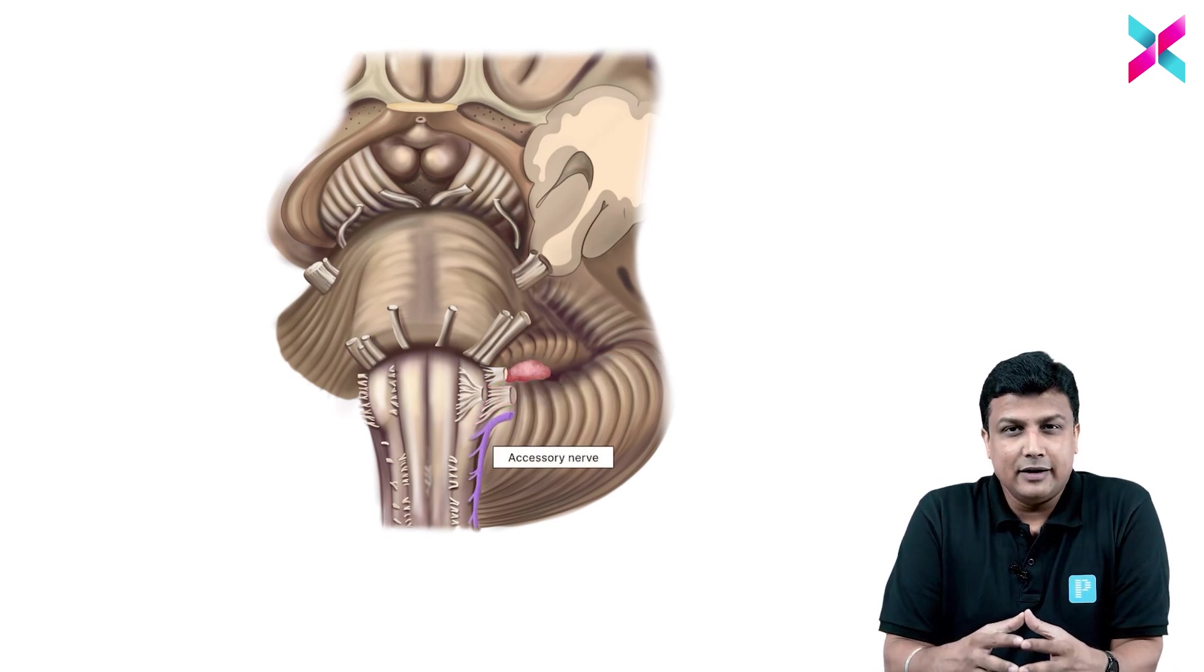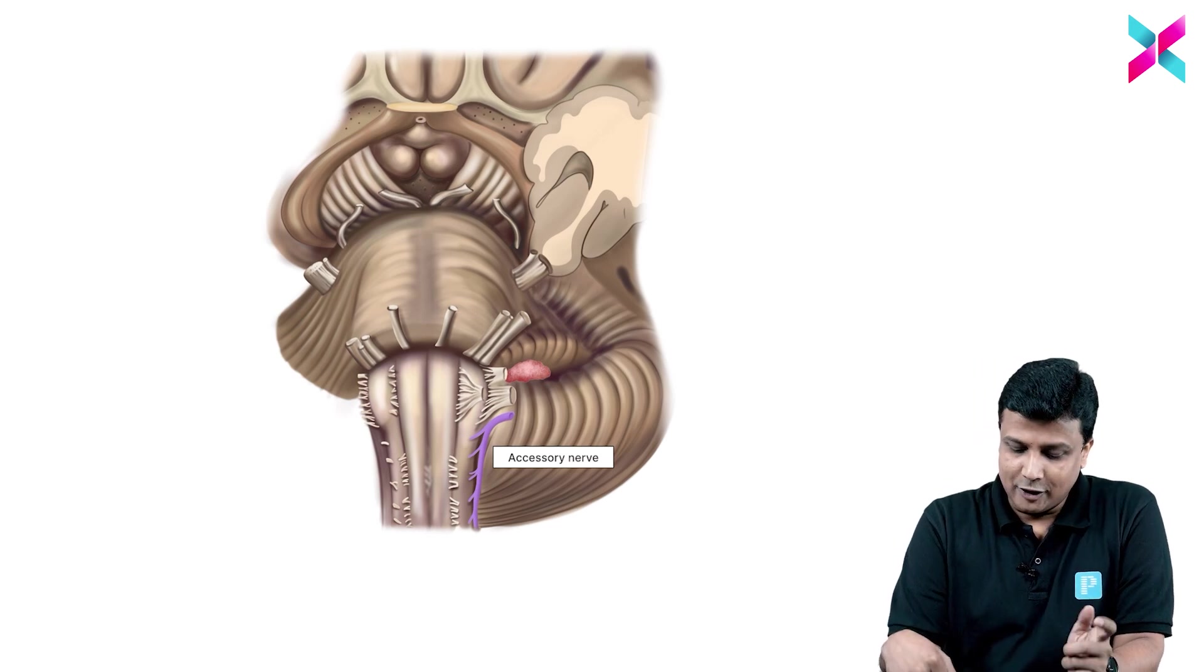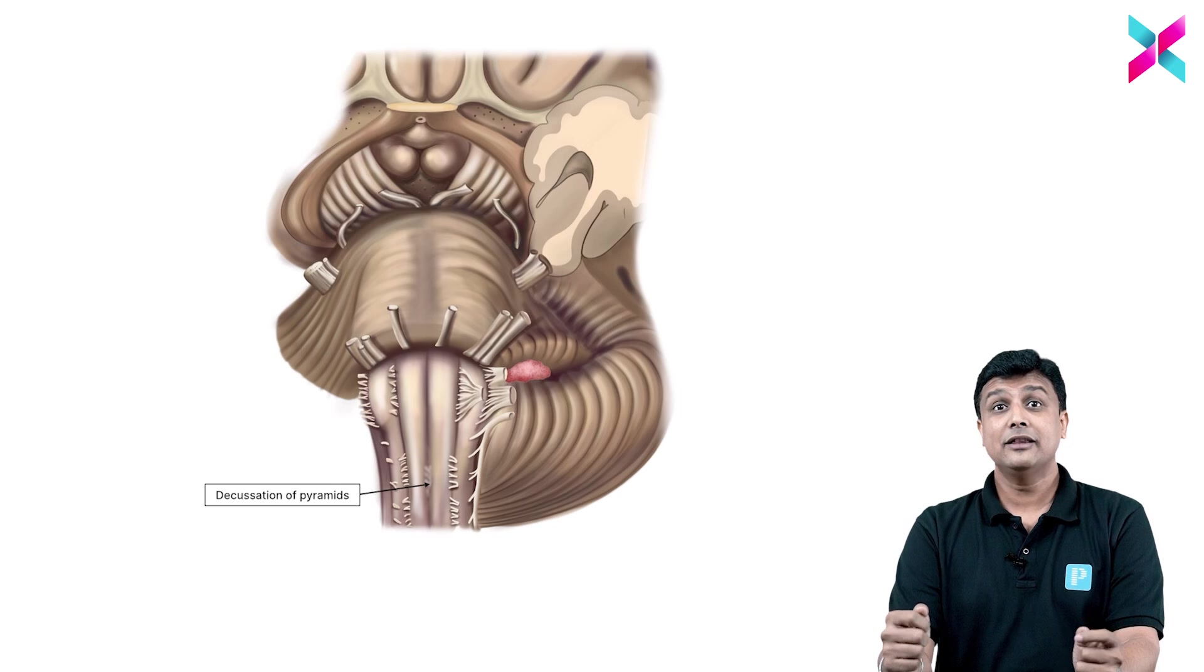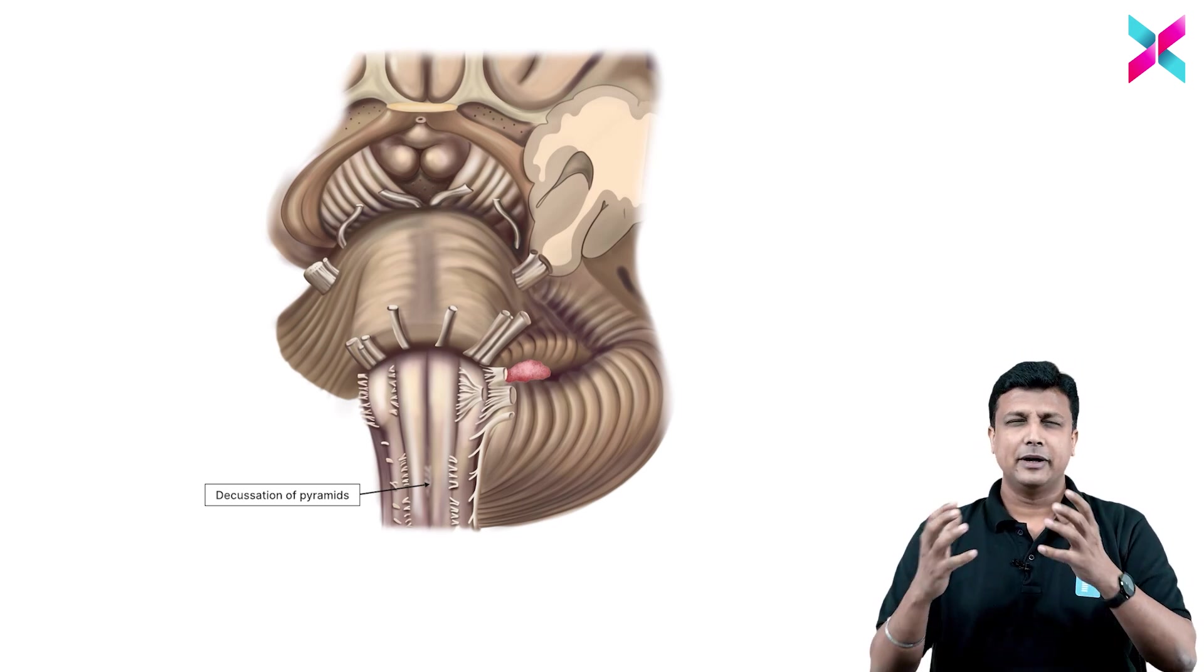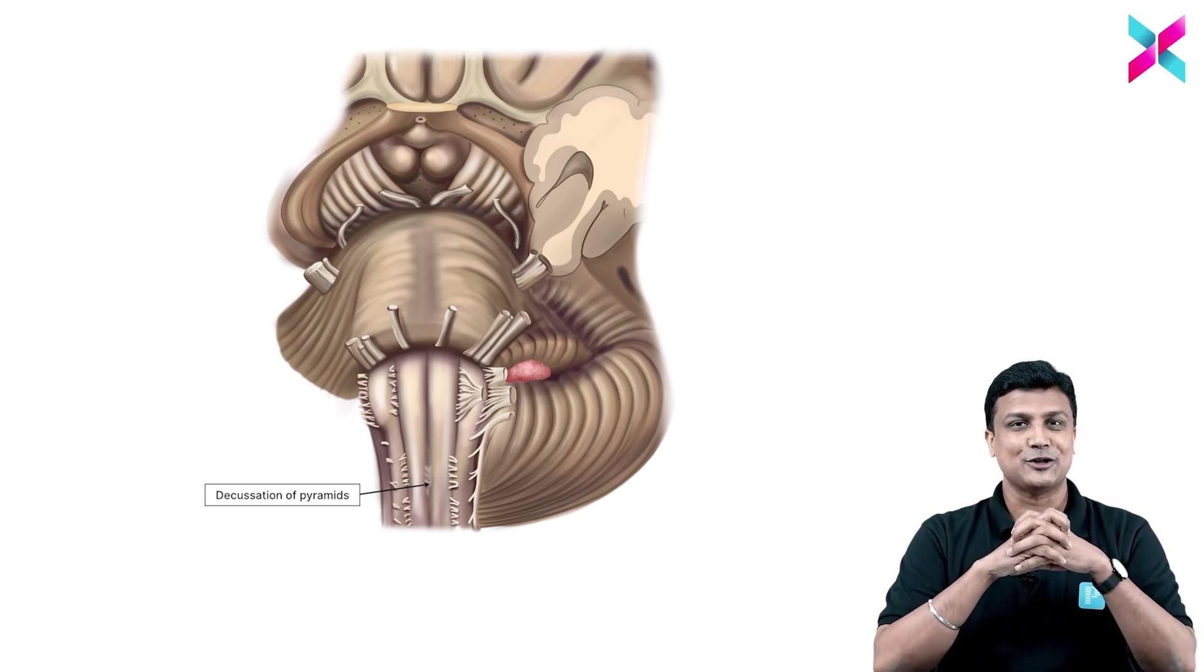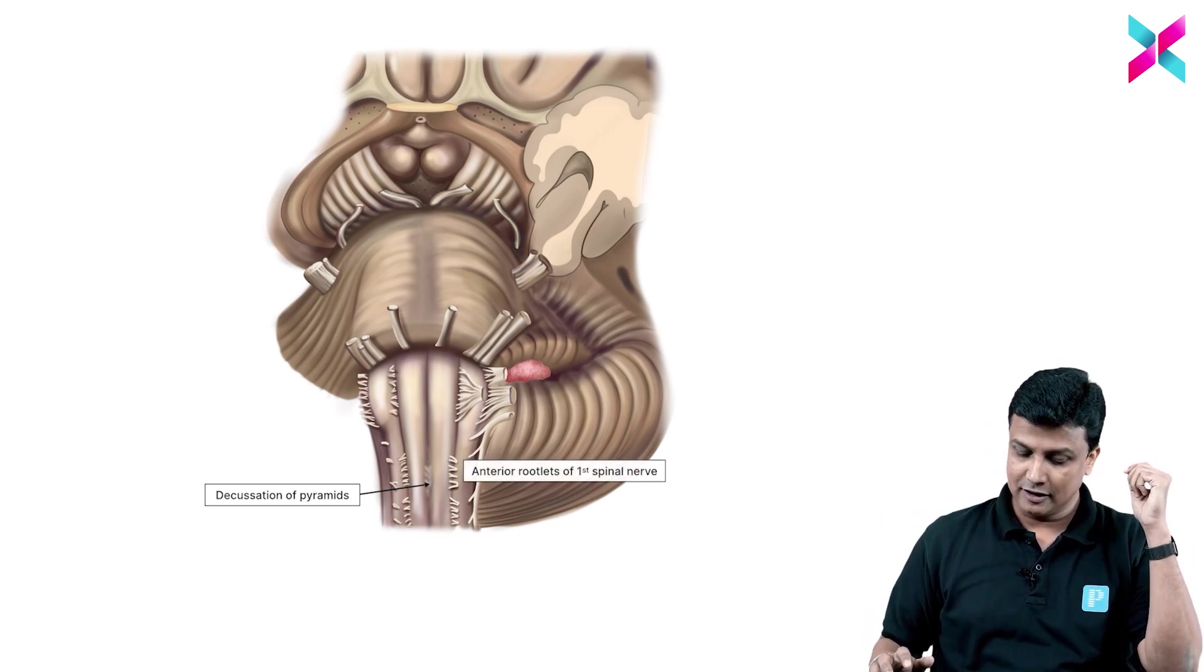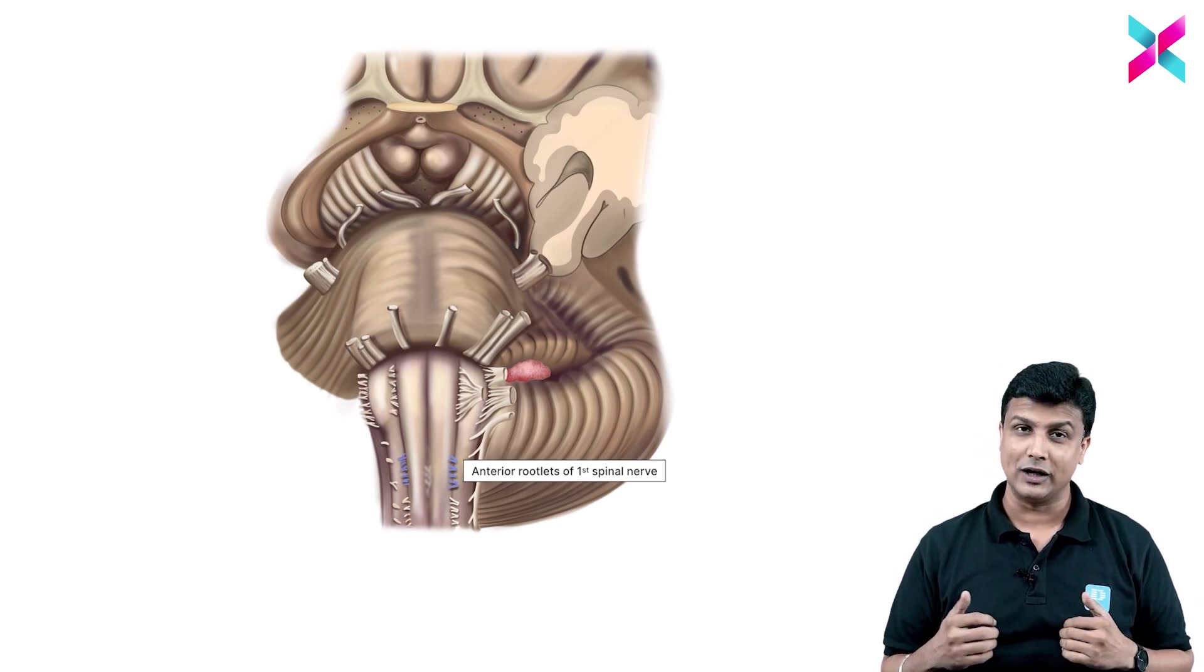Now in this diagram, if you want further information here, that will be the decussation of the pyramidal tract here. I'll tell you what the pyramidal tract is later on. The descending tract will actually decussate - that is pyramidal decussation. And further, these nerve roots which are coming out, that is nothing but the first spinal nerve rootlets which are going to come out here.